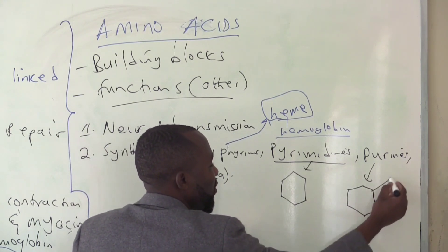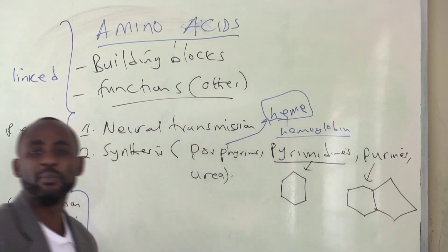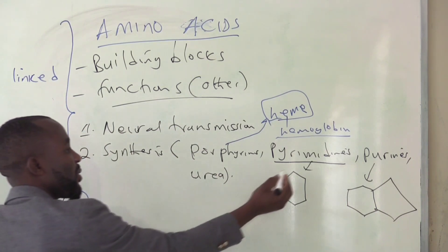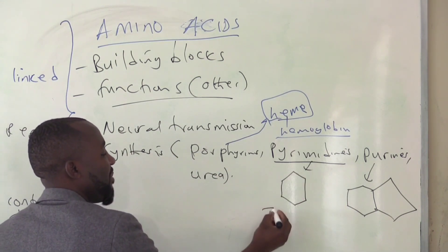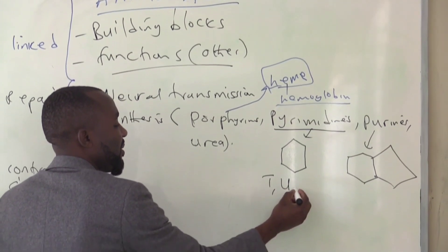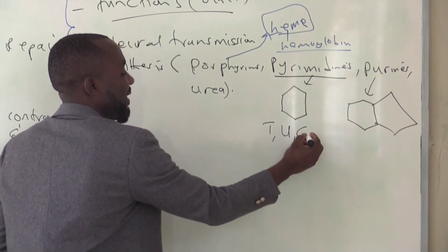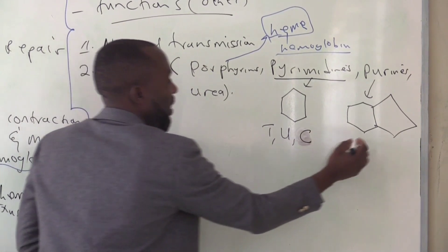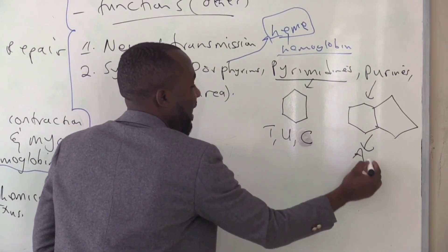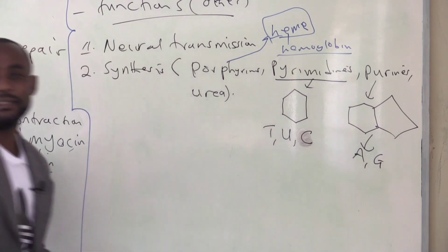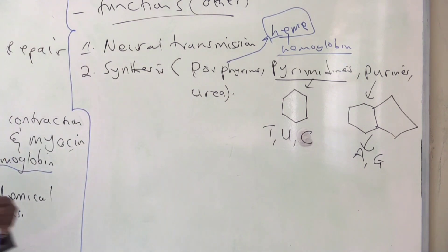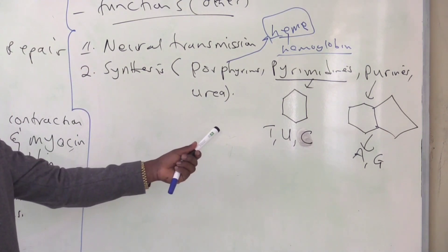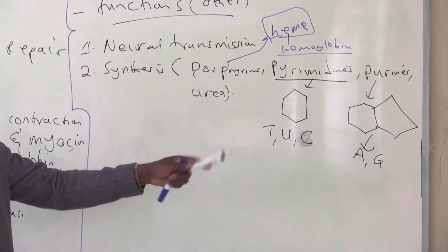And when we come to nucleic acids, I'll also explain further to say, examples of pyrimidines are thymine, uracil, and cytosine. Then examples of purines are adenine and guanine. I don't want to spend much time explaining on the nitrogenous bases, because this will be covered in another topic.